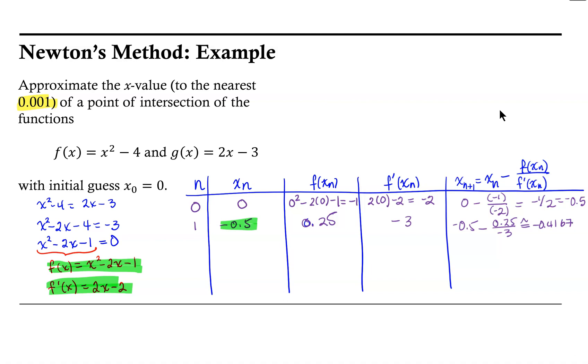We're going to 4 decimal places because we want accuracy to 3 decimal places. So then our second iteration has produced an x-value that is -0.4167, and now we will iterate through the process again using -0.4167 in the function we created and its derivative.